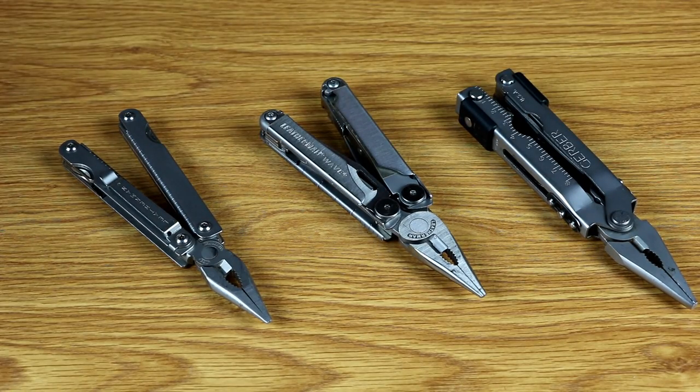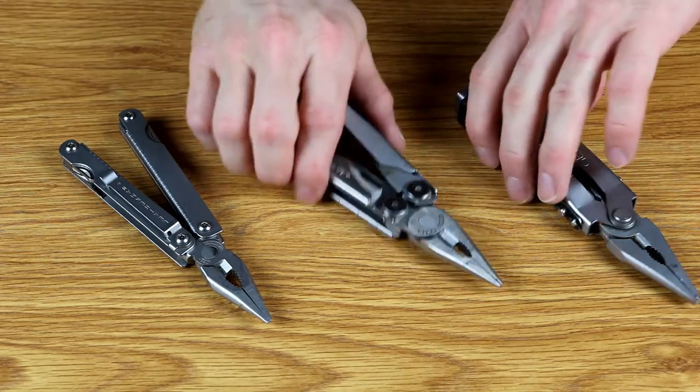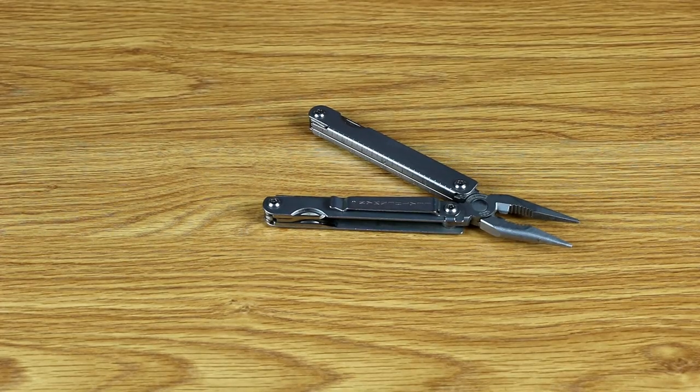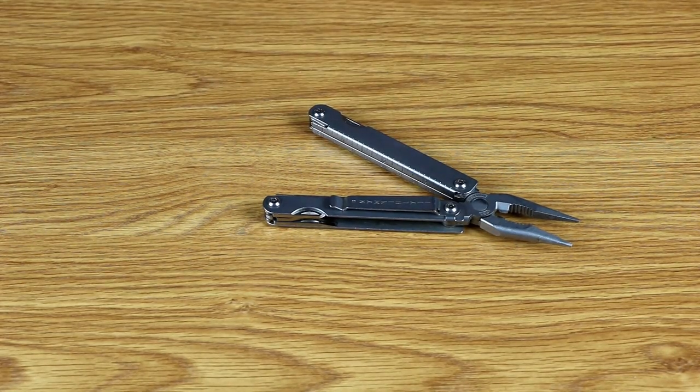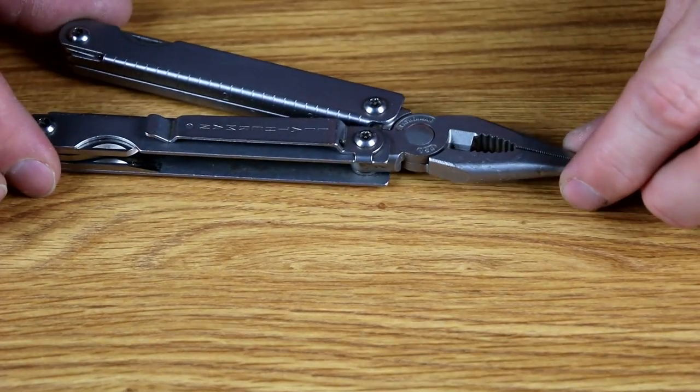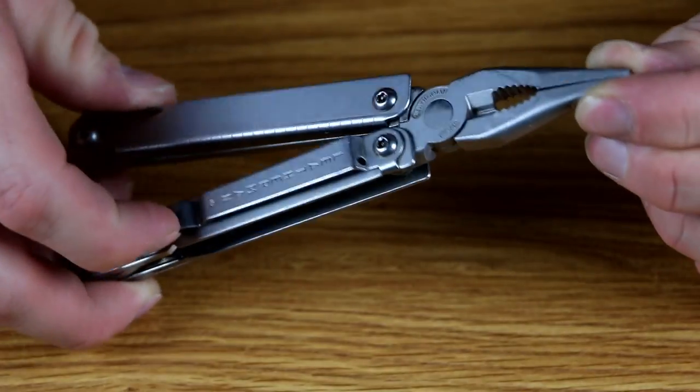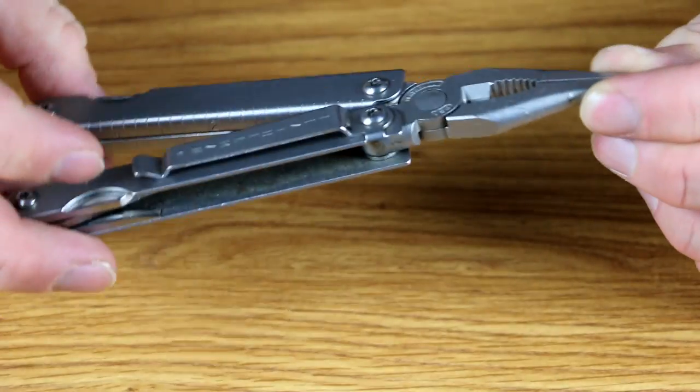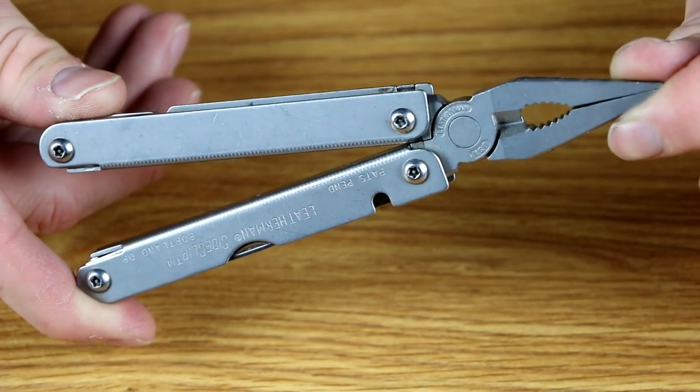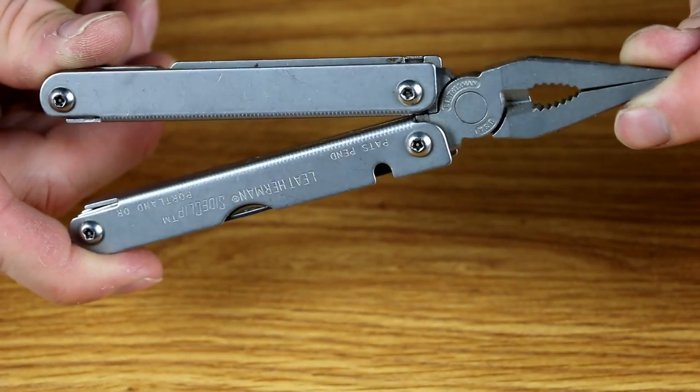So I'm going to start off with the one that I started off with way back in the day. It's actually not in production anymore. This is the original style of Leatherman multi-tool. I'll bring you guys in so you can see a little easier. This particular one is called the Leatherman Side Clip. You can see it's got a little clip there on the side and it's rather thin. Leatherman makes a bunch of multi-tools that are just like this nowadays. Most of them aren't this thin but you can find something that's going to fit in about the same category.